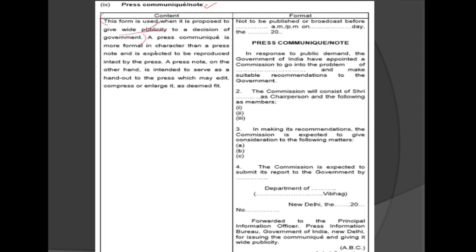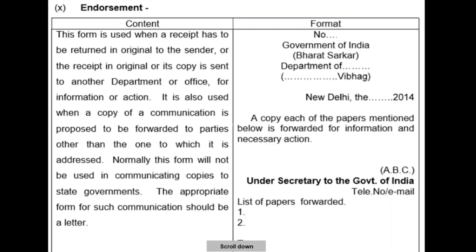A Press Communiqué is more formal in character than a Press Note, and it is expected to be reproduced intact by the press — meaning the newspaper must print it exactly as given by the government body. On the other hand, a Press Note is intended to serve as a handout to the press, which may add, compress, or enlarge it as deemed fit. So simply, this is the difference between Press Communiqué and Press Note.